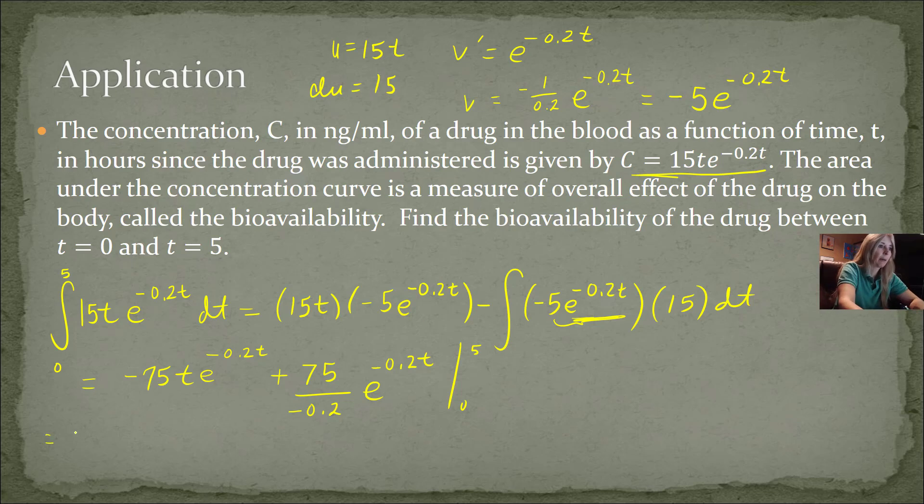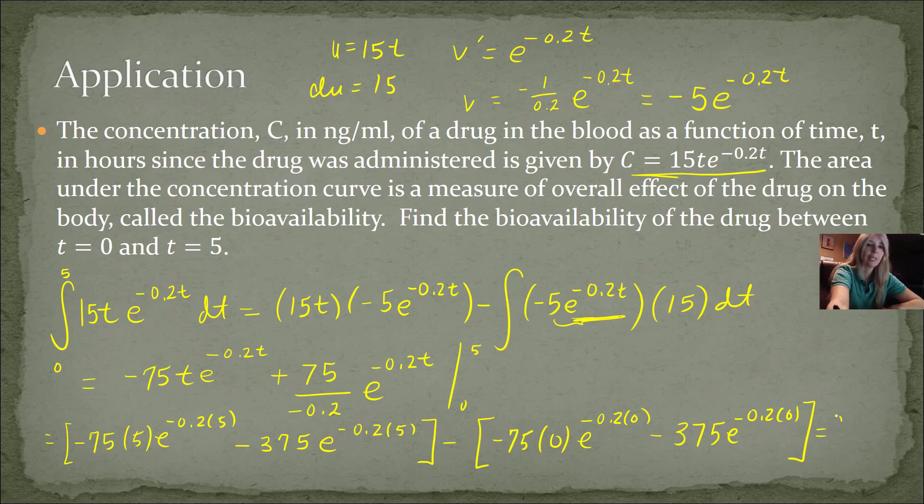So if I plug in negative 75, I plug in 5 everywhere I see a t. So I plug in a 5. Let's go ahead and just make this minus 375. If you take 75 divided by 0.2. And then e to the negative 0.2, plug in 5. So that's my f of b, my f of a. I'm going to start plugging in 0. So I have negative 75 times 0, e to the negative 0.2 times 0, minus 375e to the negative 0.2 times 0. And if you put all of that in your calculator, you should get 99.1 nanograms.